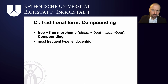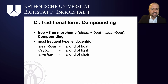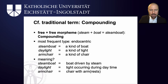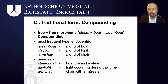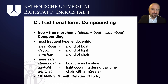The most frequent type are endocentric compounds: steamboat is a kind of boat, daylight is a kind of light, and armchair is a kind of chair. The second part is always the semantic head and the first part is only a modifier. When you look at the meaning of the compounds, however, there is no straightforward prediction as to what the modifier-head structure is going to be. A steamboat is a boat driven by steam, daylight is light occurring during daytime, and an armchair is a chair with armrests — so the specific relation between the two nouns is frame-based and requires encyclopedic knowledge.